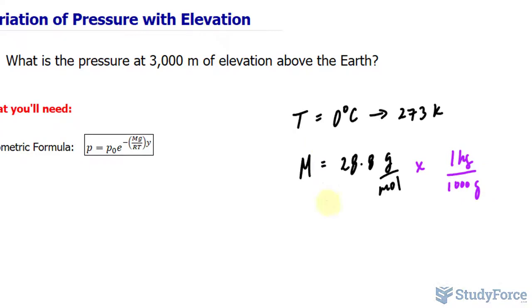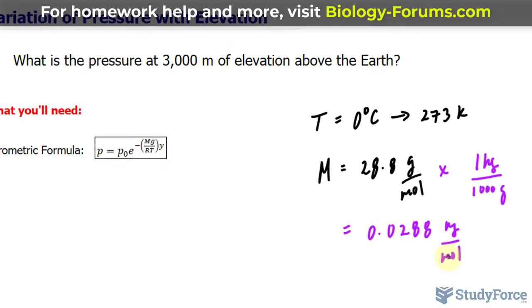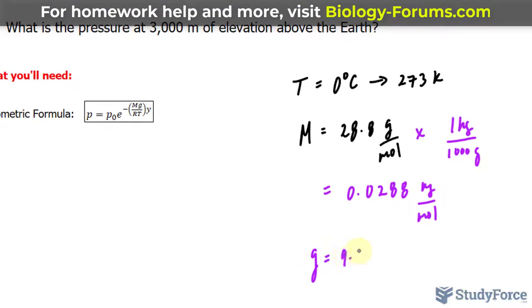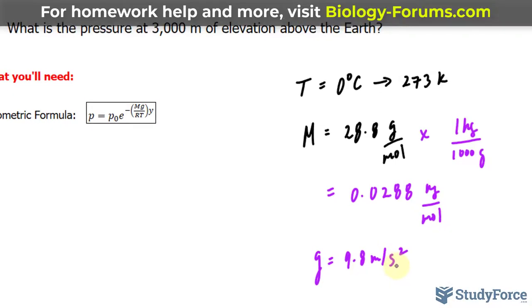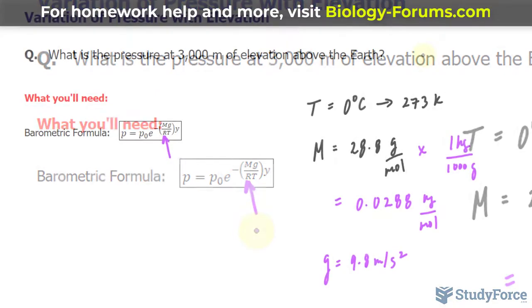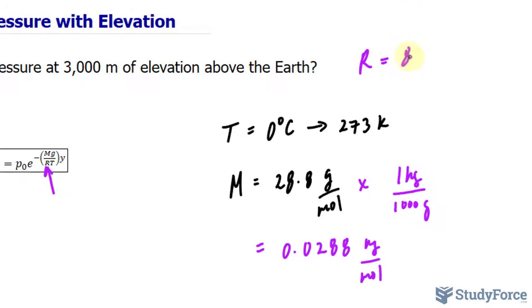The gravitational constant represented by g is 9.8 meters per second squared. And this R is also a constant. It can be written in different ways, but the one that we'll be using here is 8.3 joules per mole times Kelvin. This will ensure that the units cancel out nicely.